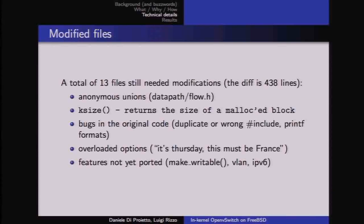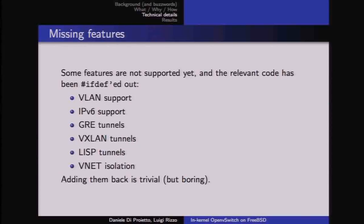A few blocks of code were commented out for features we didn't port yet: VLAN support, IPv6, and tunnels such as GRE and VXLAN. These were not skipped because they're impossible — it's just deferred work. We wanted to confirm the main features worked first; finishing these is mostly straightforward once there is motivation to do so.